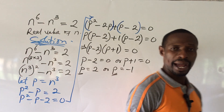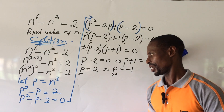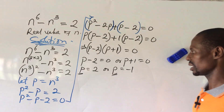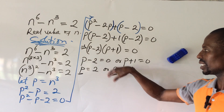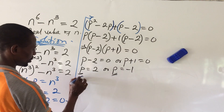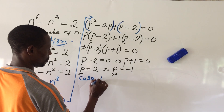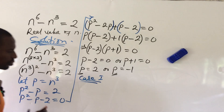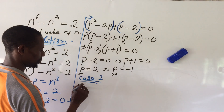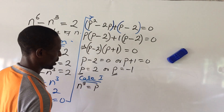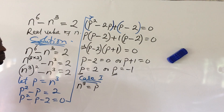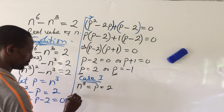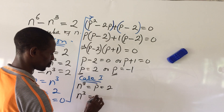Recall that at the beginning we let p equal to n to the power of 3. For case 1, substituting back, we have n to the power of 3 equal to p, and p is 2. So n to the power of 3 equals 2.